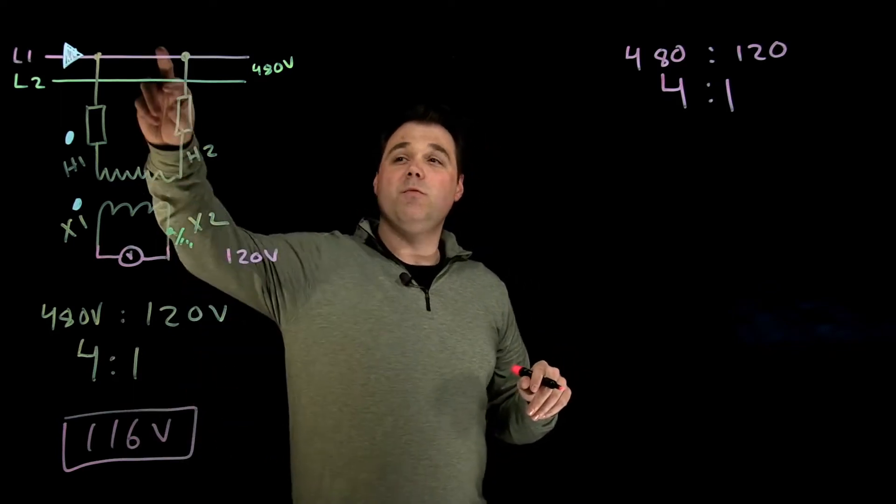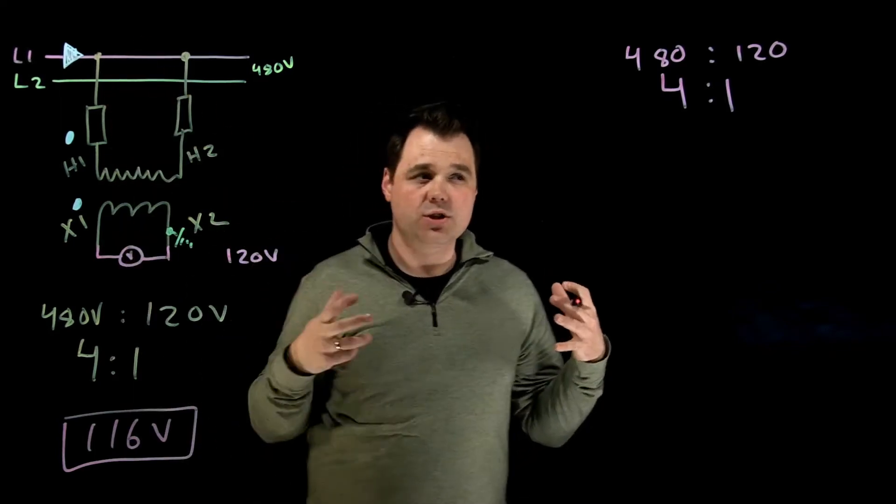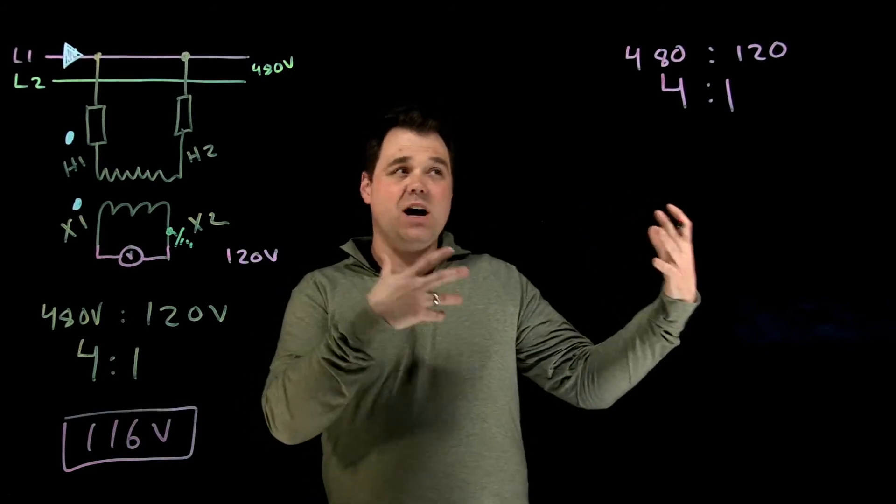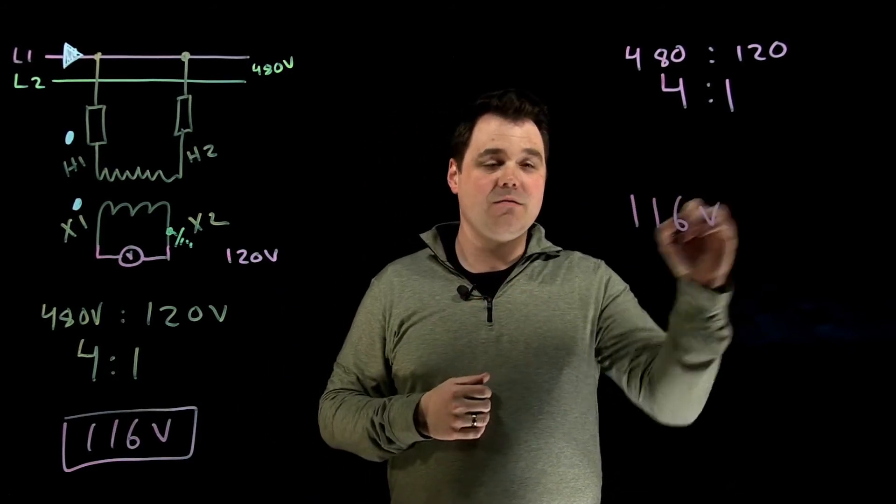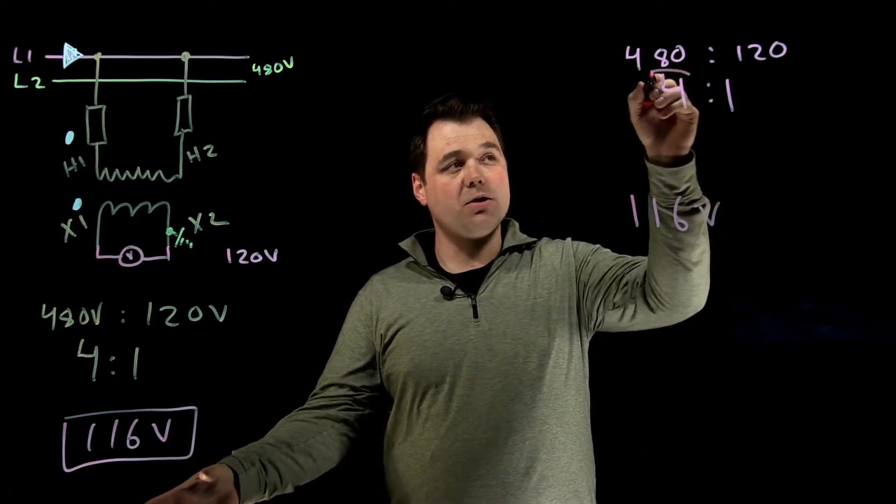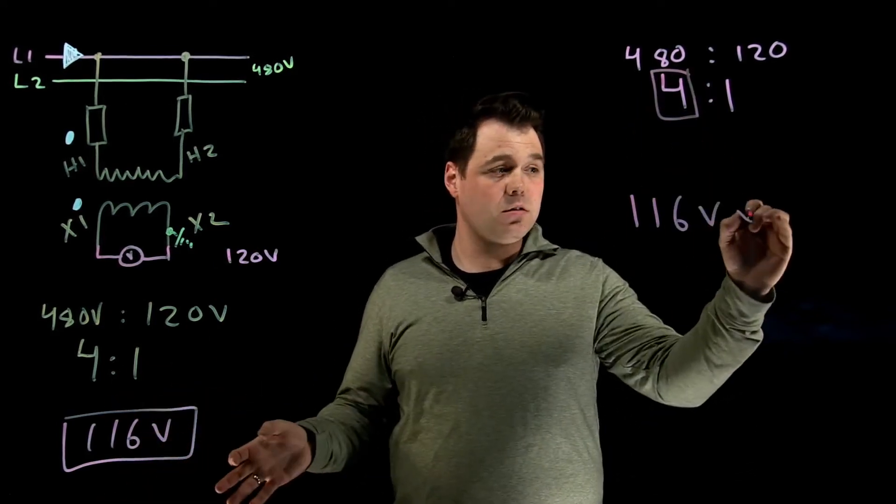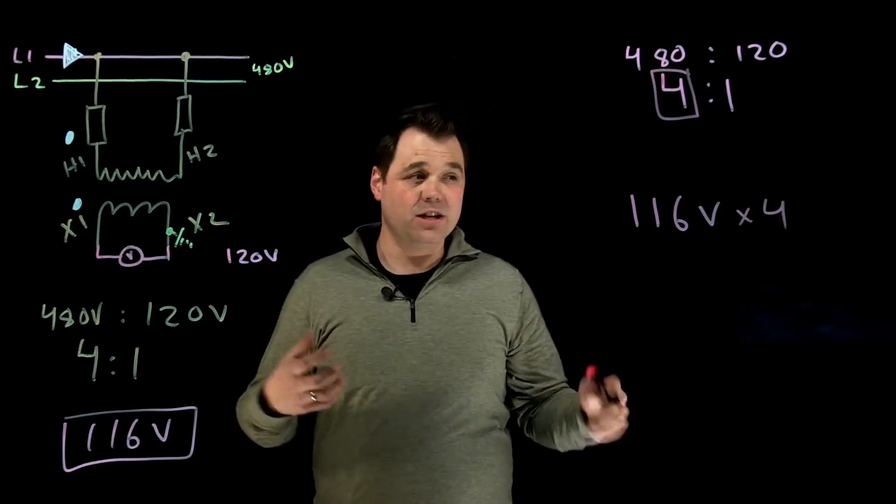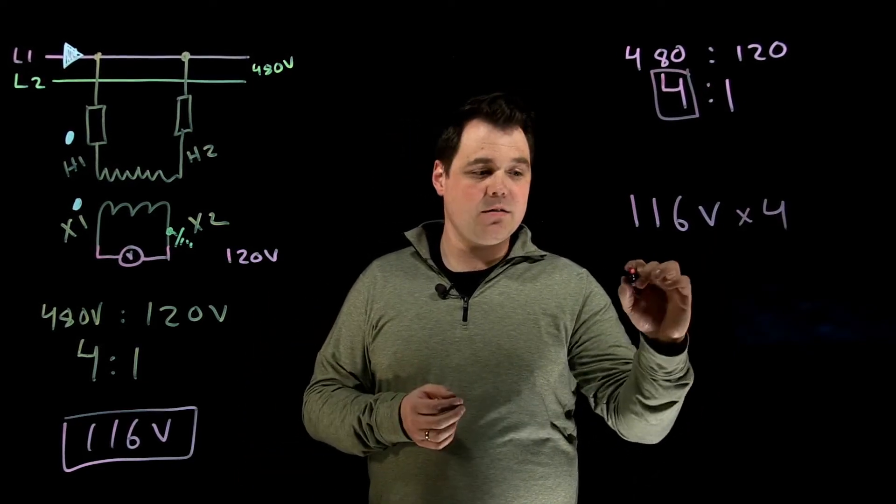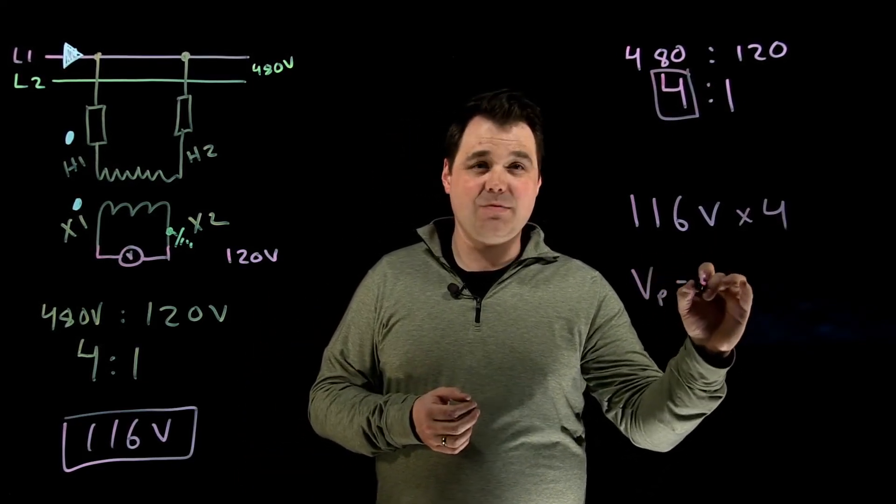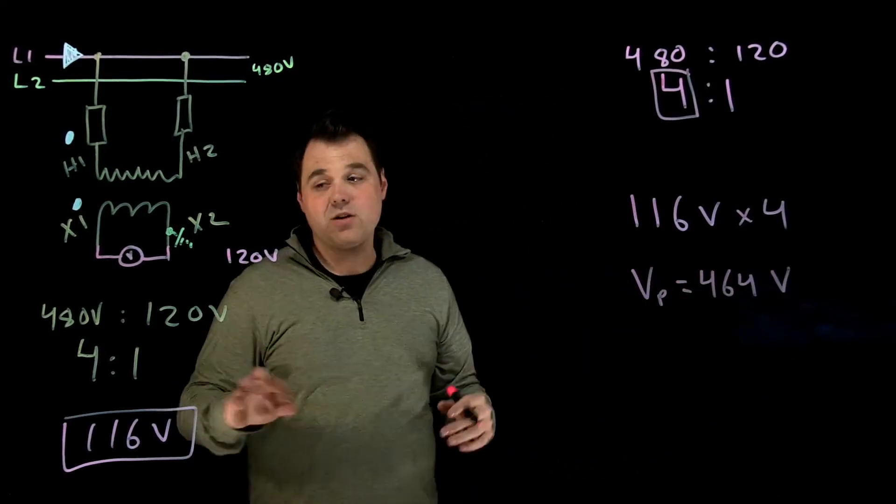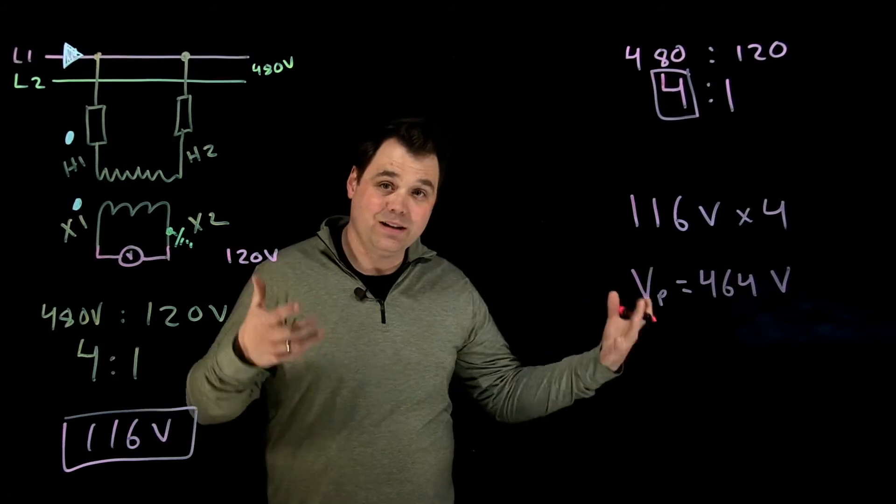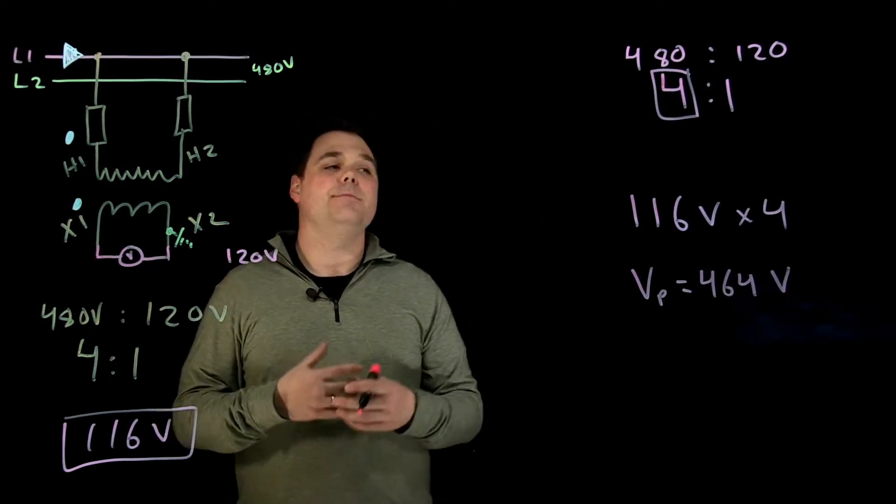What does that mean would be my actual primary voltage? Well, in this case, if we read 116 volts, we're going to take 116 volts that I'm reading, multiply it by my ratio. That tells us that on the primary, it would actually be 464 volts, but our meter only needs to be rated for that 120.